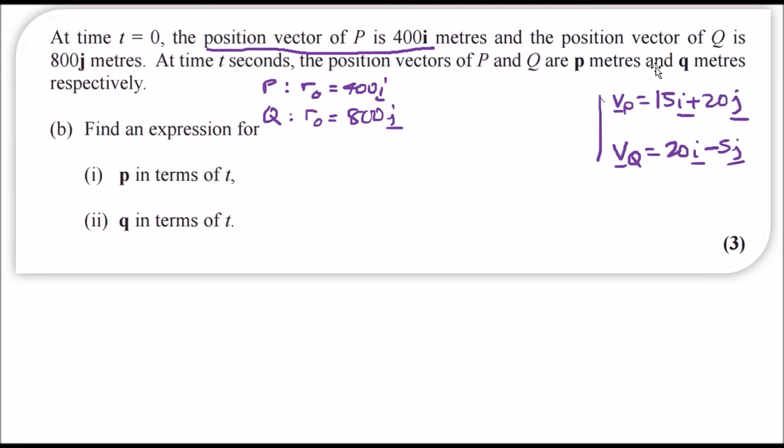At time t seconds, the position vectors of P and Q are now p meters and q meters respectively. They want us to find the expression for p and q. I also copied down the velocity from the previous question because this is going to be needed.